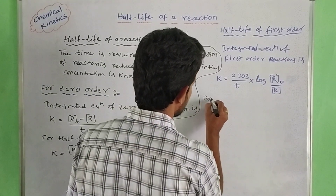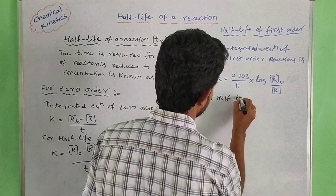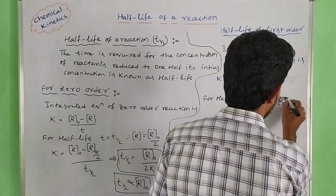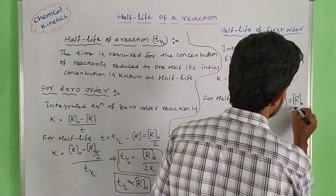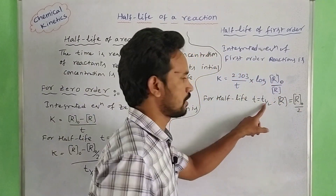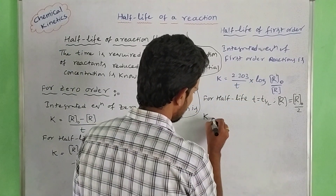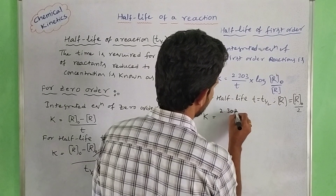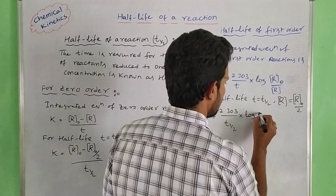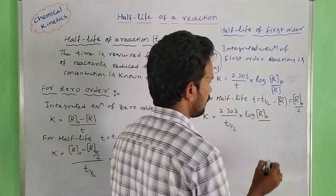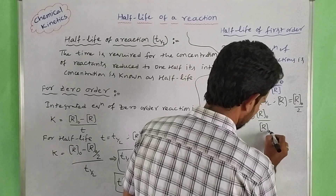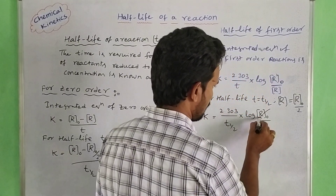To apply for half-life, we substitute T equal to T₁/₂ and R equal to R₀ by 2. So: K equal to 2.303 by T₁/₂ into log of R₀ divided by R₀/2. Here R₀ cancels, leaving log of 2.